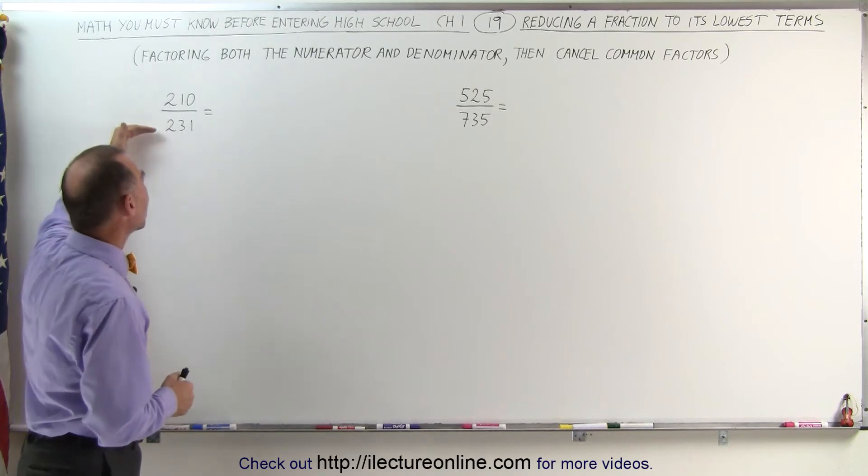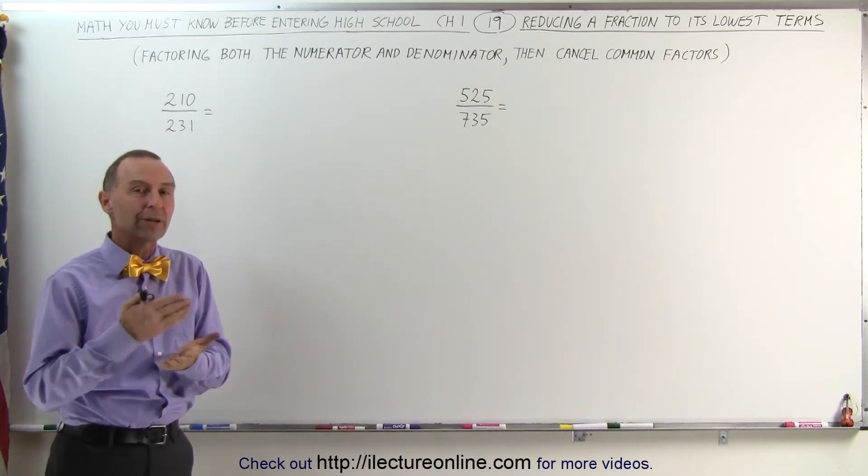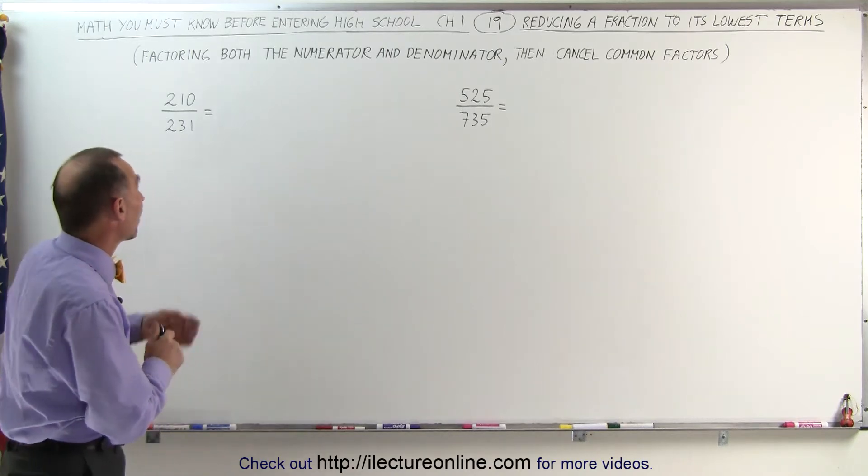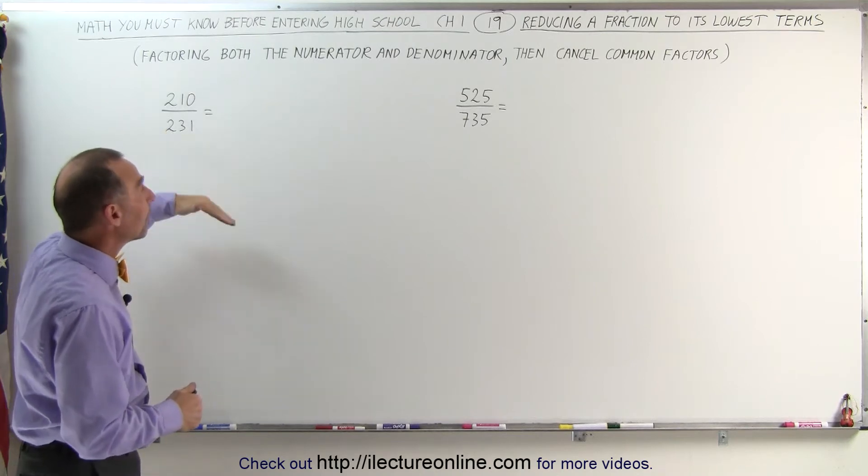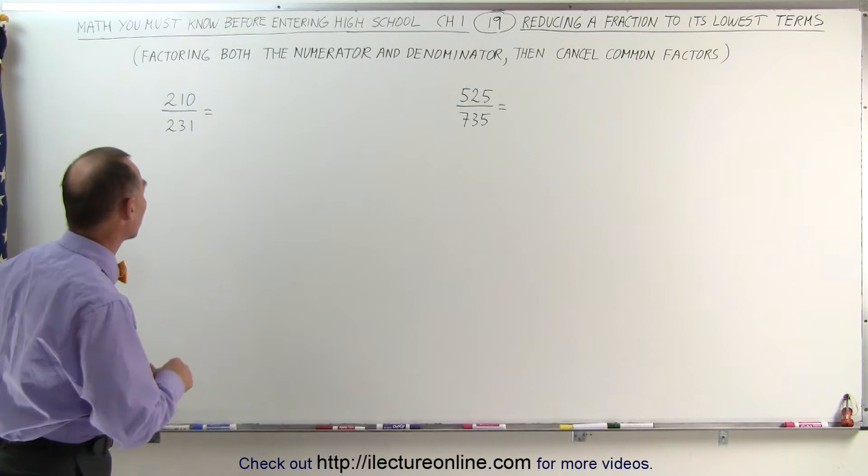You take the numerator and the denominator separately and factor each of them into a product of their prime numbers. You factor them so you can write them as a product of their prime factors, and then you reduce any common factors in the numerator and the denominator. So let's start with the number 210.